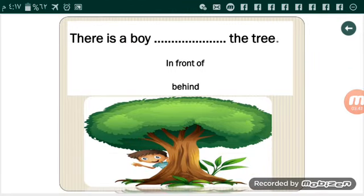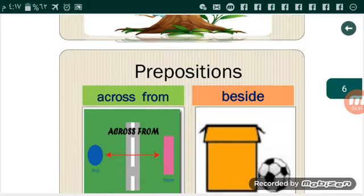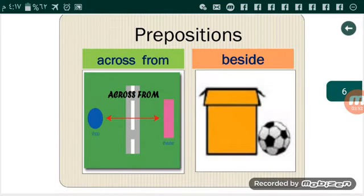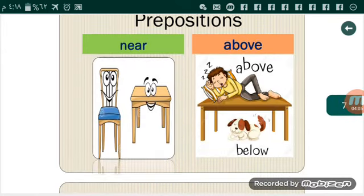There is a boy in front of or behind the tree. Well done, behind. Across from, في الجهة المقابلة, وفي حاجة فاصلة بينهم, في شارع, في طريق. Beside, بجانب. Near, قريب. Above, أعلى.